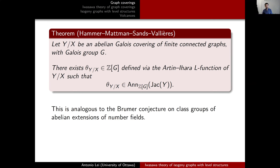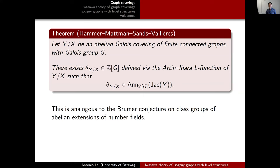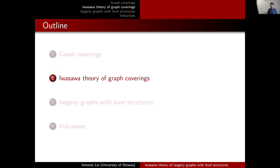When I saw Jonathan Sands' talk, I thought it was fascinating how they could prove such a result, completely analogous to number fields. After the talk, I talked to Jonathan and said that in Iwasawa theory we are interested in a tower of extensions, not just one abelian extension. I asked whether an Iwasawa theory for graph coverings could be developed. He said he wasn't sure, but that some people were thinking about these questions, and would keep me informed. A few months later, the pandemic hit, and then Jonathan messaged me that some people had been able to prove results in this direction.